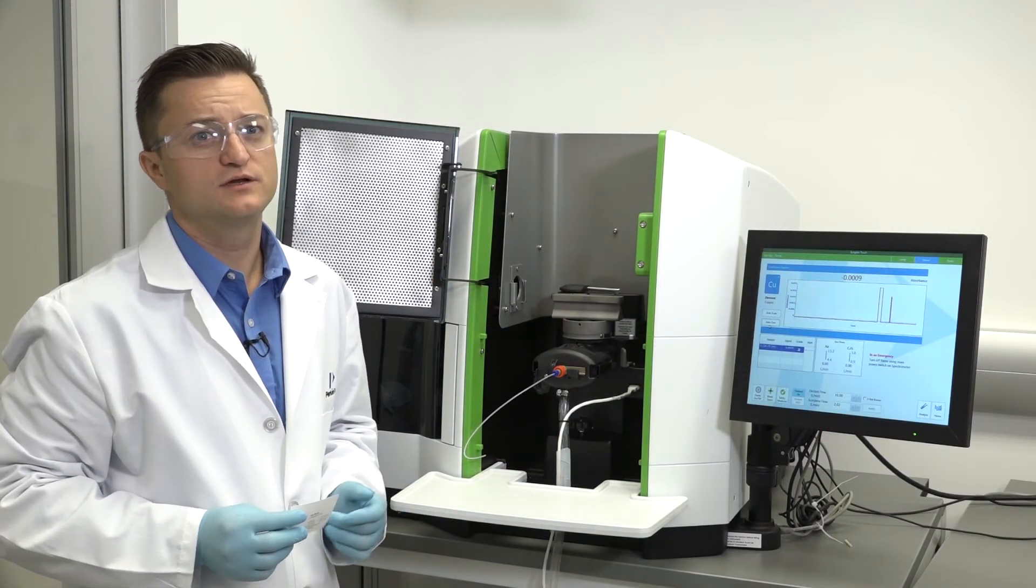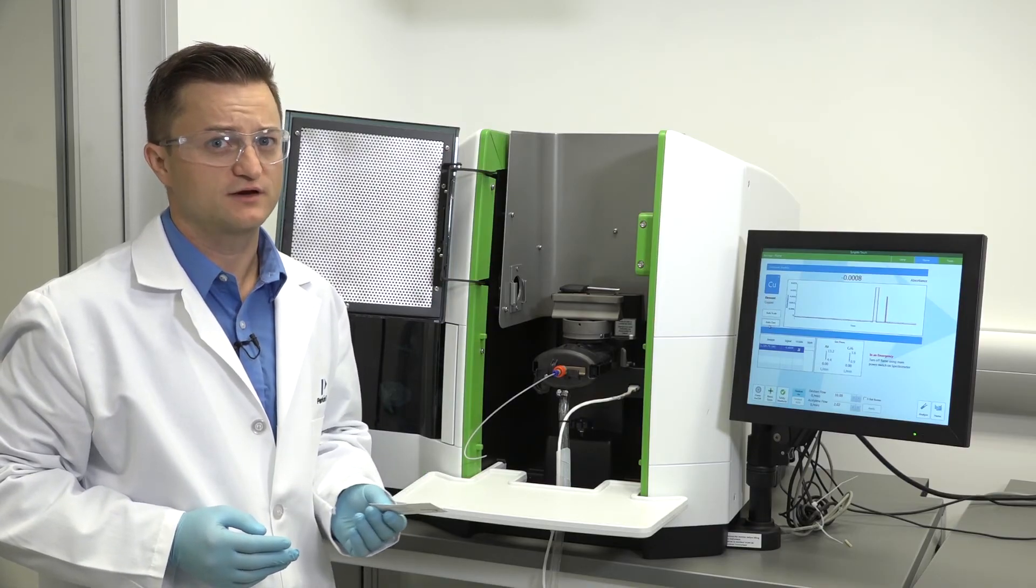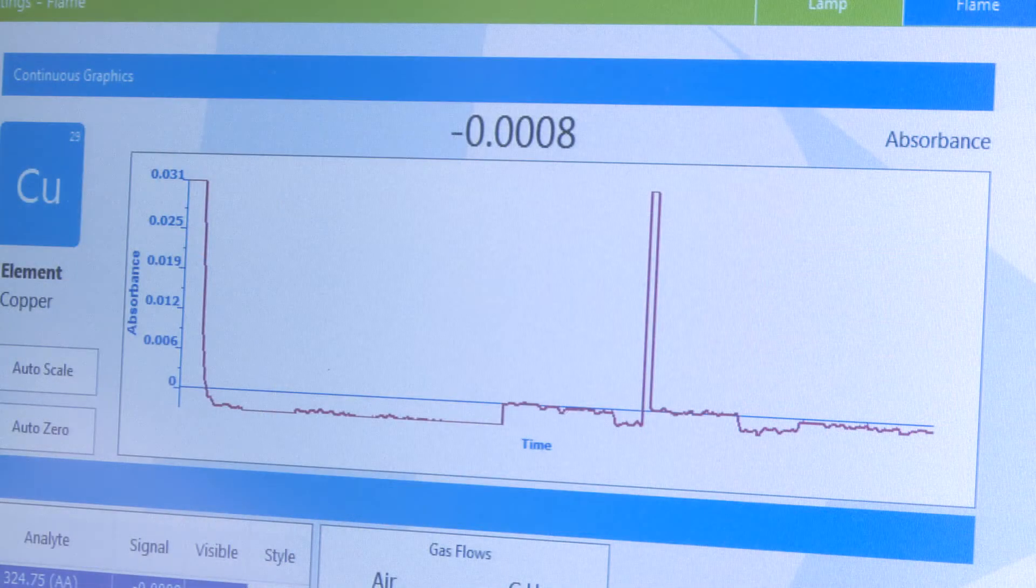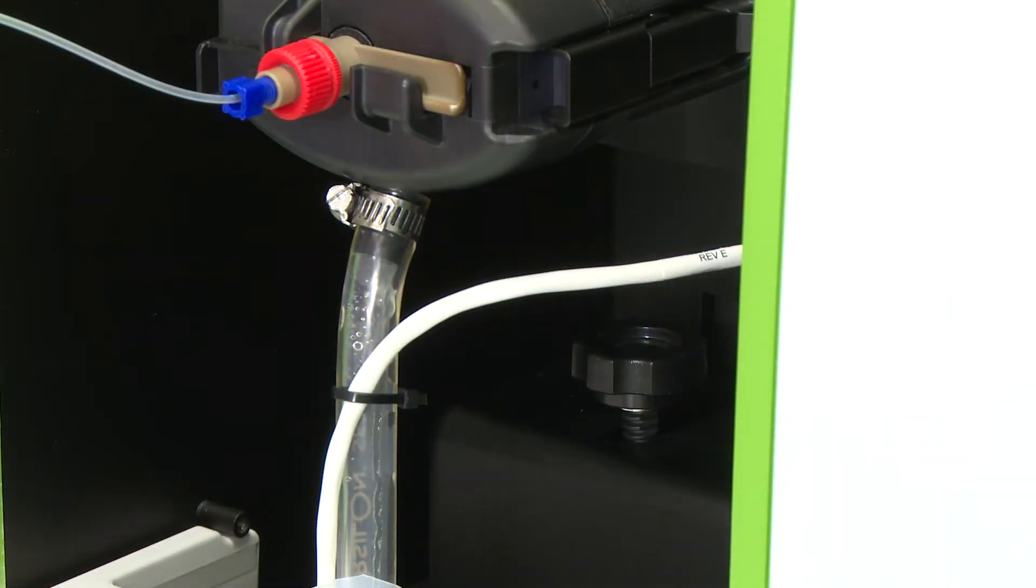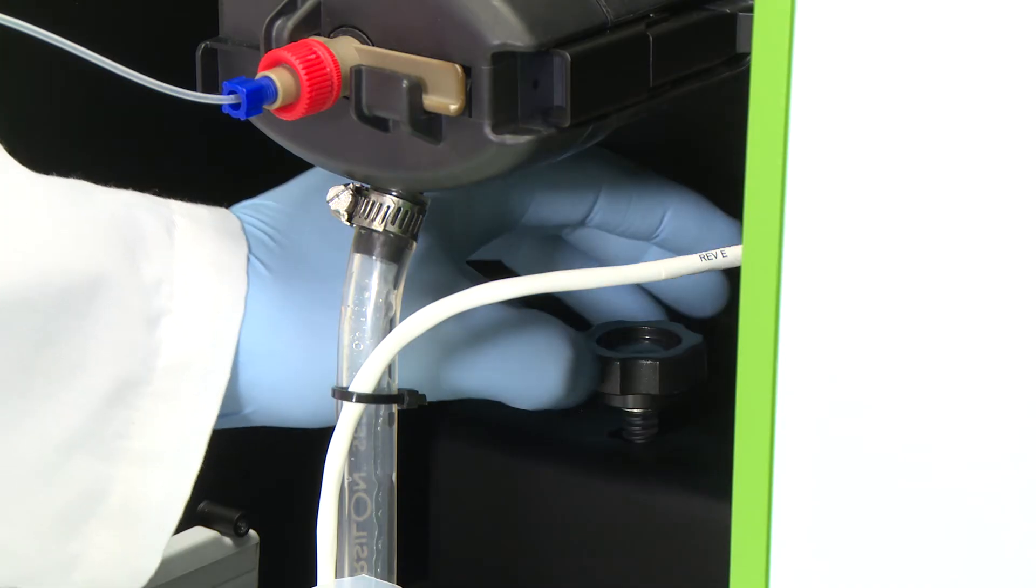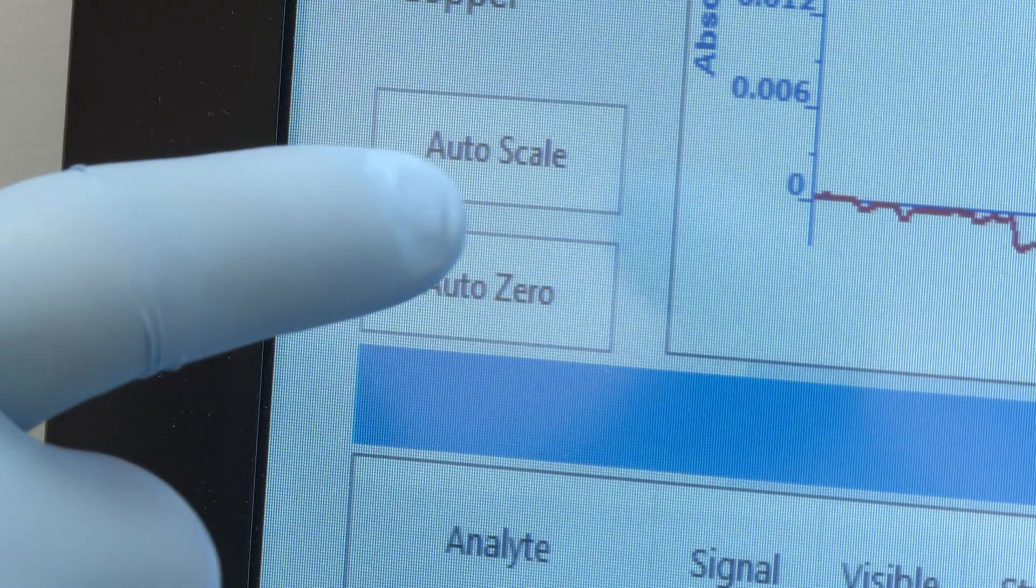Then, go to the spectrometer control and click on the continuous graphics. The continuous graphics window will appear. Lower the burner with the vertical alignment control so that the burner head is well below the radiation beam. Auto-zero the signal by clicking Auto-zero.